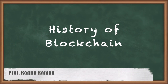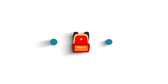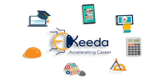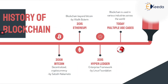In this section, we are going to talk about the history and evolution of blockchain technology. Since we have now understood what blockchain technology is and what this course is going to offer you, let's look at the brief history of blockchain. Because any technology that you learn, it's very important to understand where it all started — that gives us a clear picture of what we are going to look at.